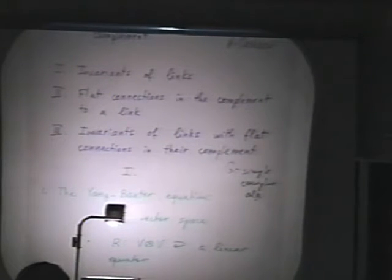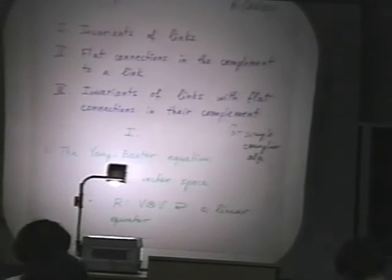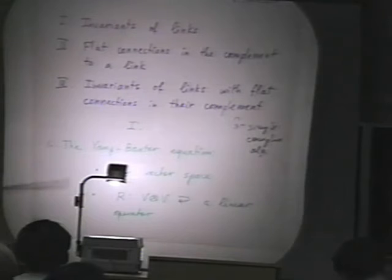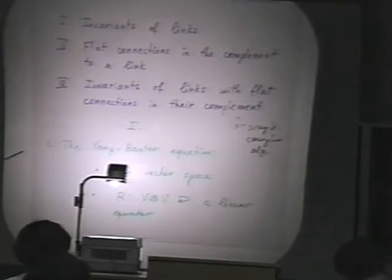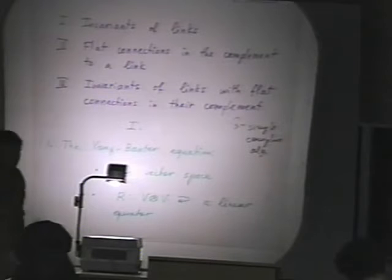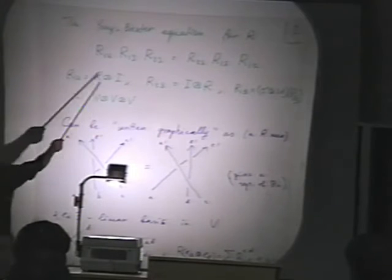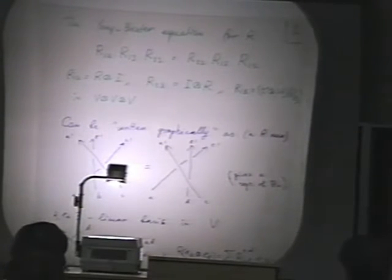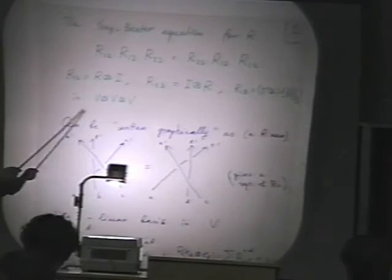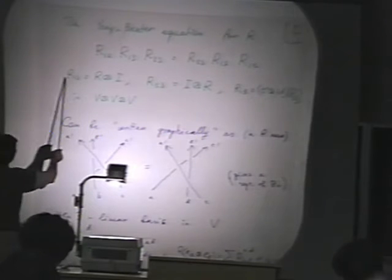First, let me remind the construction that appeared maybe 10 to 12 years ago. This is the construction of invariants of links based on linear operators satisfying the Yang-Baxter equation. Let me remind what this equation is. Fix a vector space and a linear operator acting in the tensor square of this space.